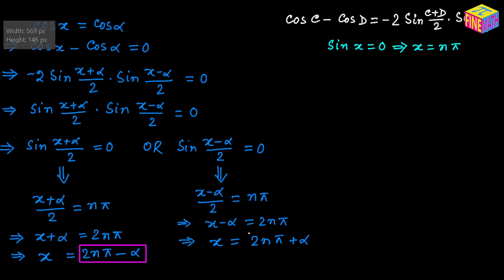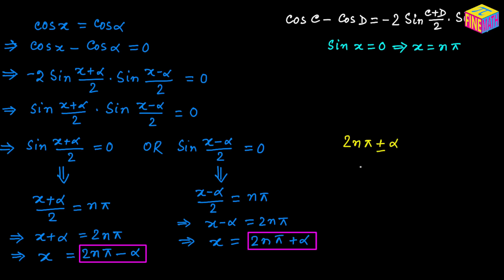So we got two solutions for x, and combining them we can write: x equals 2n times pi plus or minus alpha, where n is an integer — positive, negative, or 0.